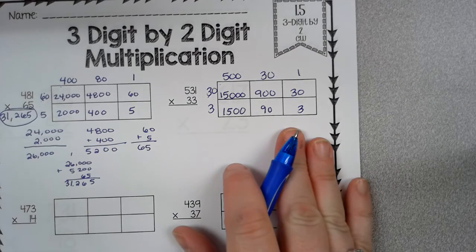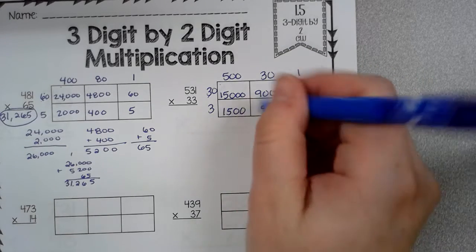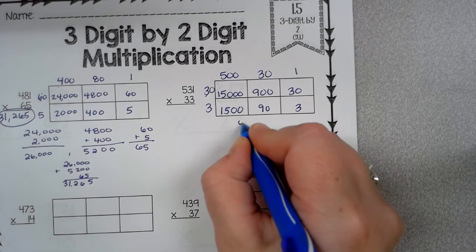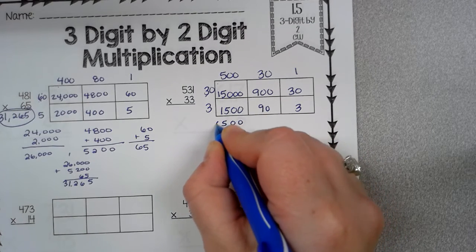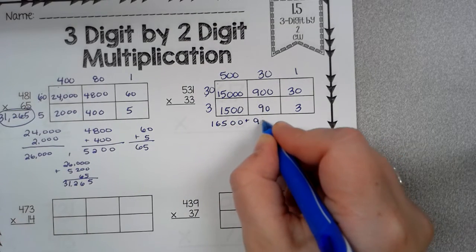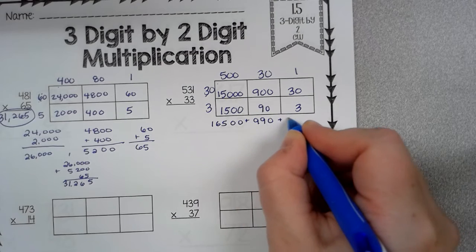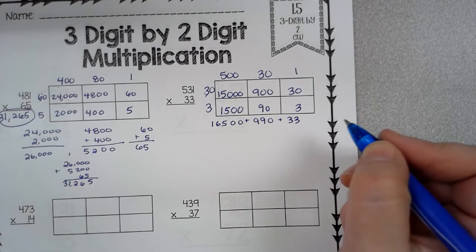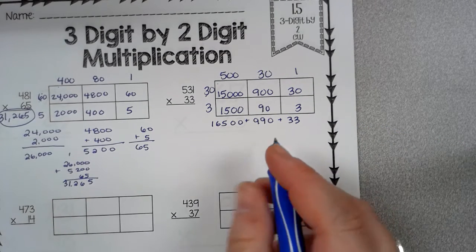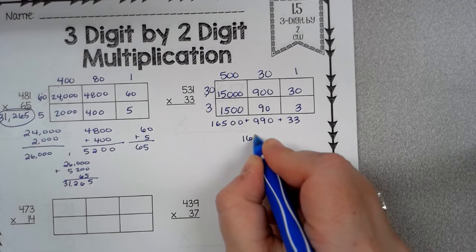So now since I have these lined up, I can just add from here. So 15,000, 900, 30. Now I'm not smart enough to do that horizontal. So I got to rewrite it vertically.